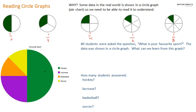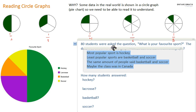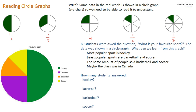By taking a look at the graph, I can figure out a few things. The most popular sport is hockey — it has the largest area. The least popular sports are basketball and soccer, because they're the smallest areas. I can also figure out that the same amount of people chose basketball and soccer, because they are the same size. Maybe this class was in Canada, because hockey is very popular there. And around other parts of the world, soccer is actually called football, so that could be another hint.